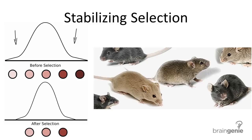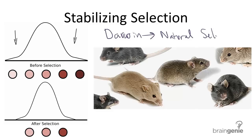Remember Darwin's theory of natural selection? Darwin's theory states that organisms with the traits best suited for their environment will survive and reproduce, and therefore pass on their genes. After generations and generations of this process, it would ultimately lead to a new species, or perhaps extinction of a species.